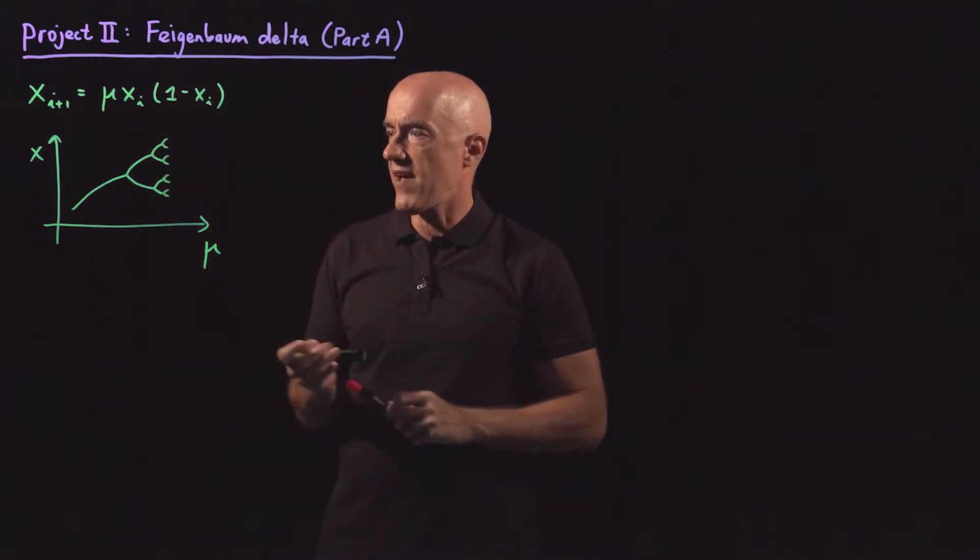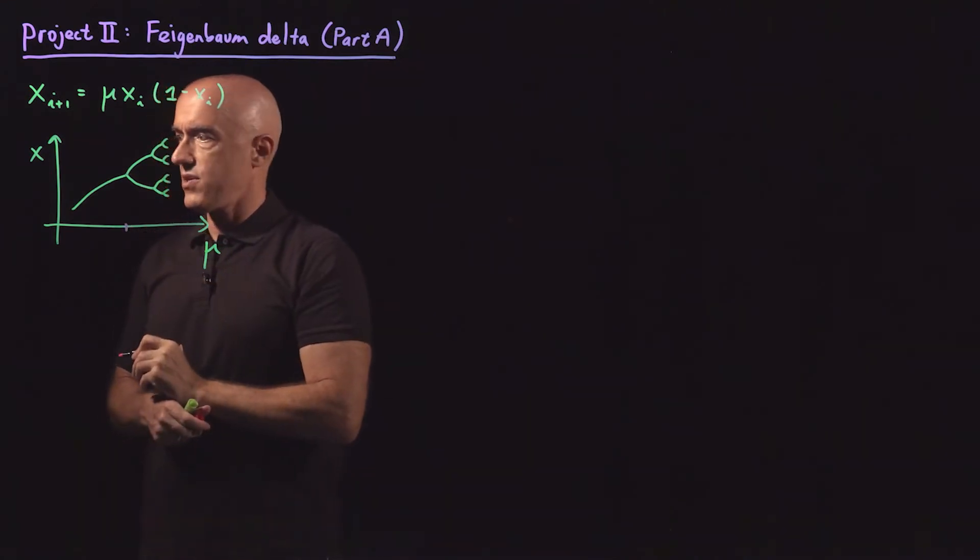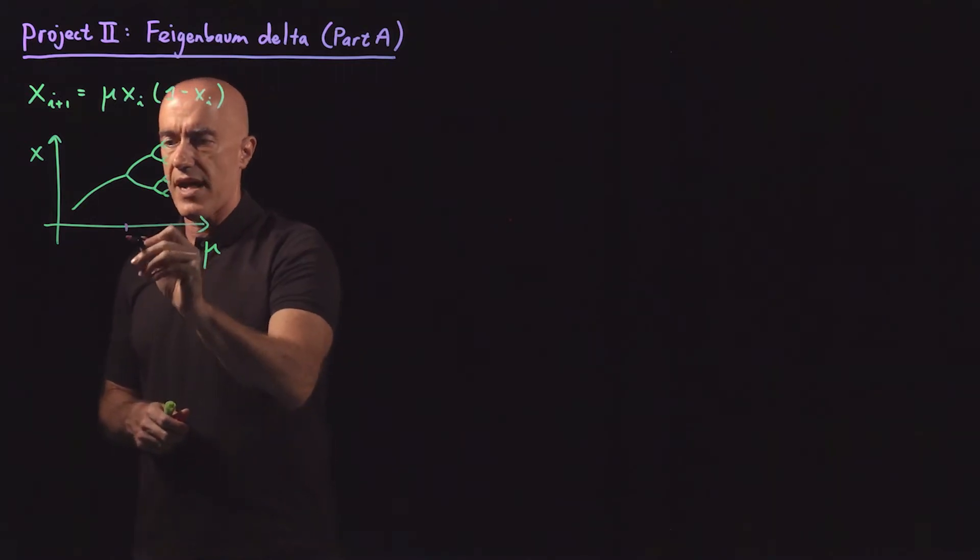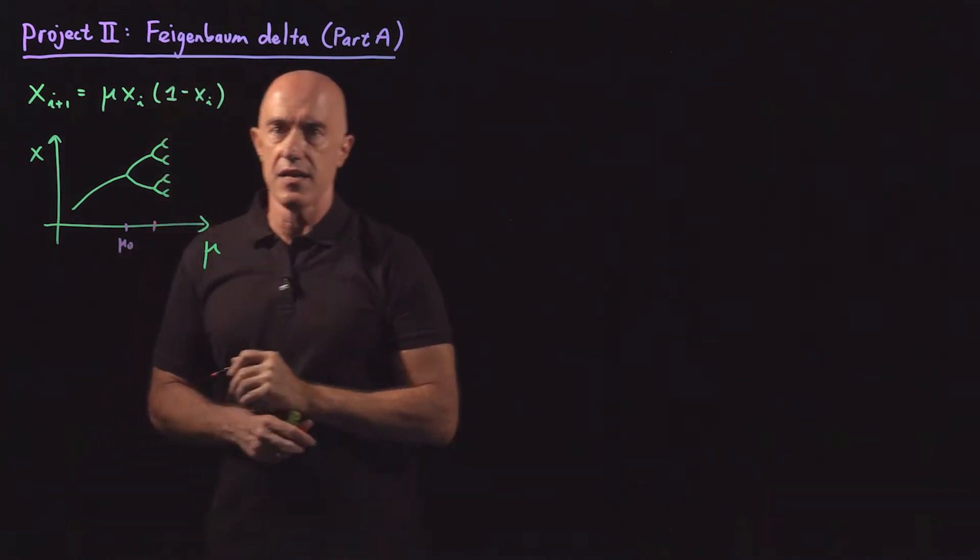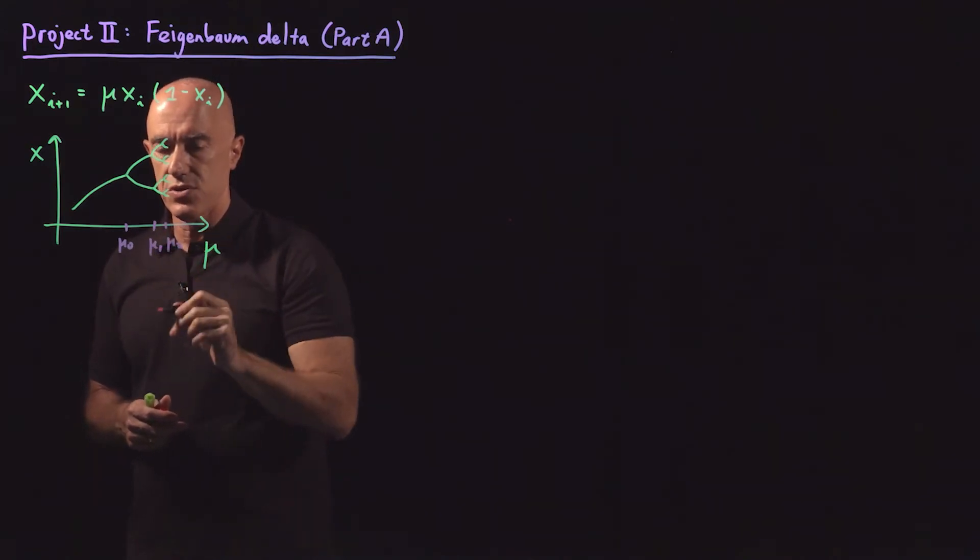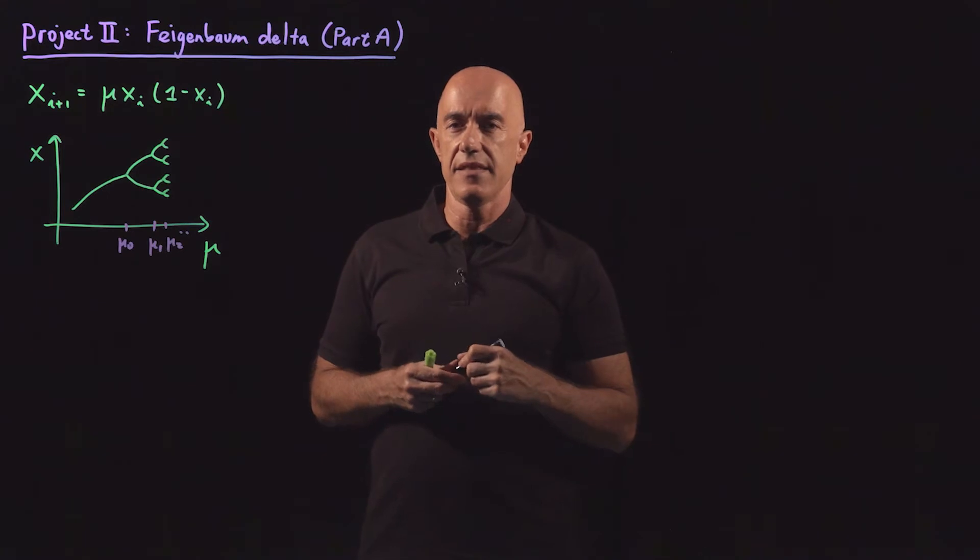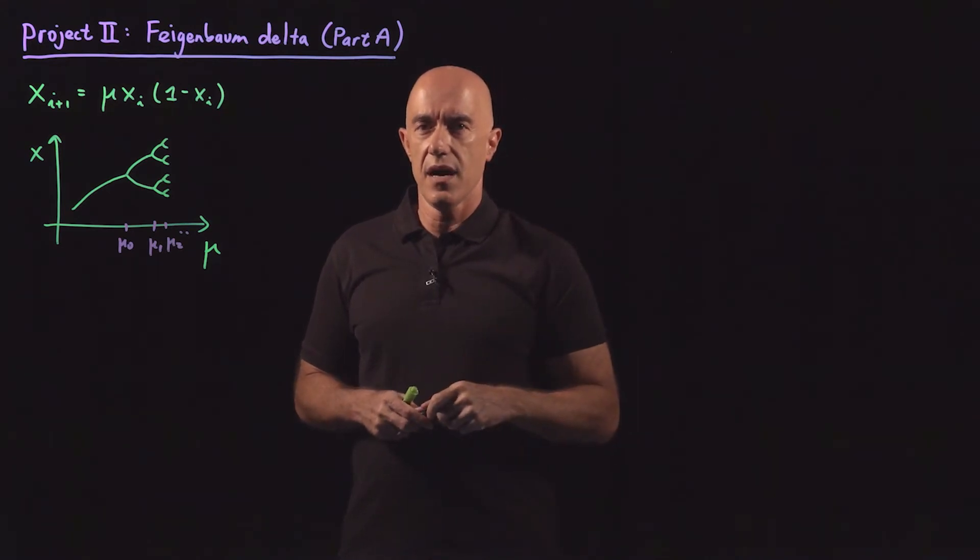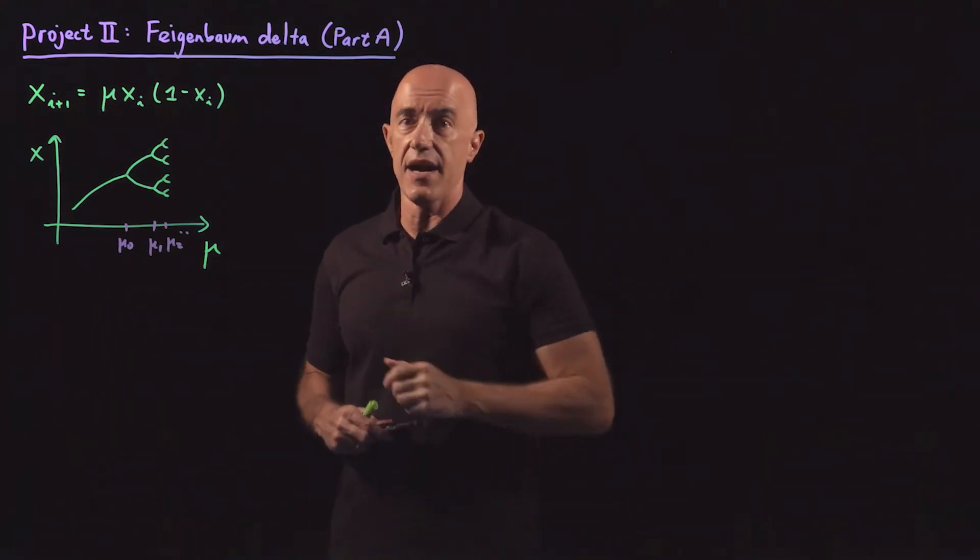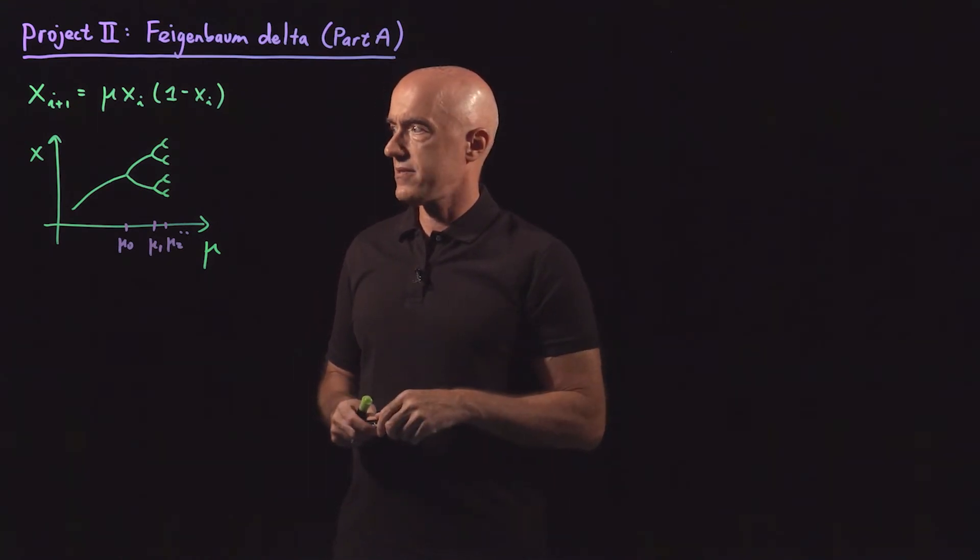So each of these had some value of mu. This one occurred at some value of mu. I'm going to call that value mu 0. This one occurred at another value of mu. We can call that one mu 1. The next bifurcation occurred at mu 2, and so on, until you end up with what is essentially an infinite period solution which gives you chaos. This is called the period doubling route to chaos.